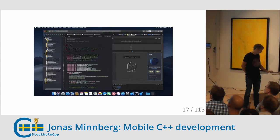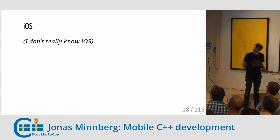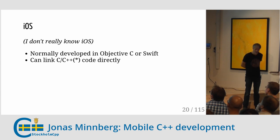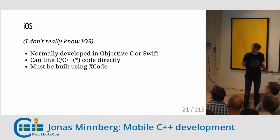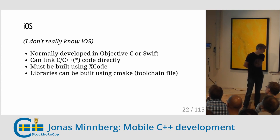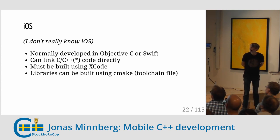On iOS, you have Xcode. I don't really know iOS that much. You normally develop in Objective-C, or in our case Swift. You can link to native code using Objective-C++, which we'll get back to. You must use Xcode to build, and you must use an Apple computer — at least the final step has to be Xcode on an Apple. But you can use CMake here as well. There's a pretty good open-source toolchain file you can use, which we also use.